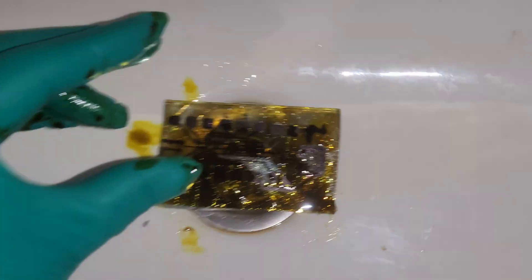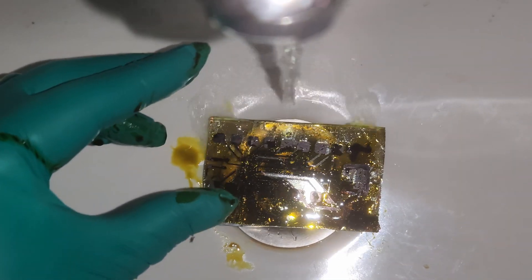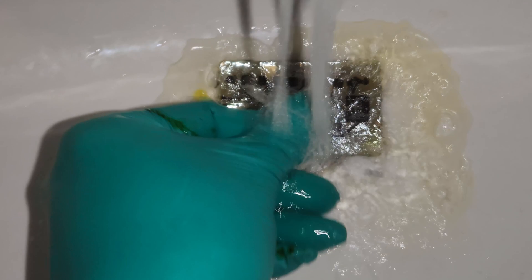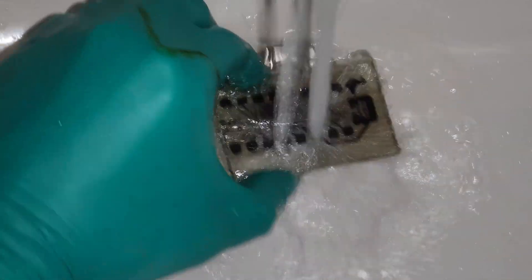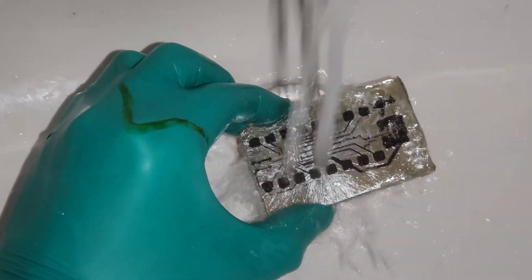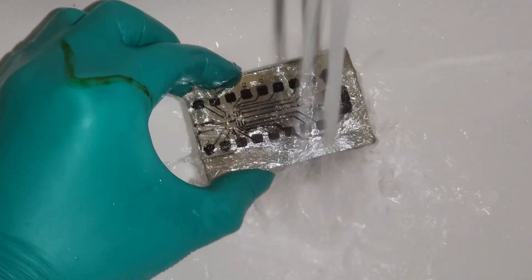Then you clean it under the water. It doesn't need to be special water, just tap water will do. There shouldn't be any remnants of iron chloride after the cleaning. Also, if a droplet falls on the sink, clean that one as well, because it will leave a mark.